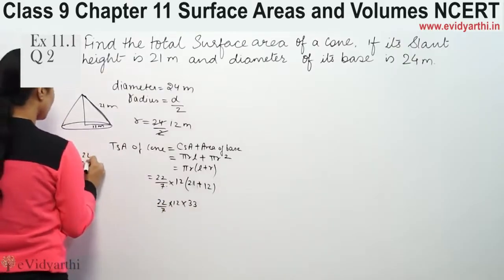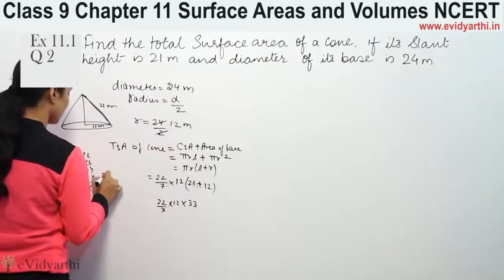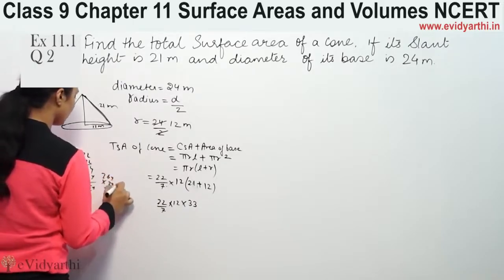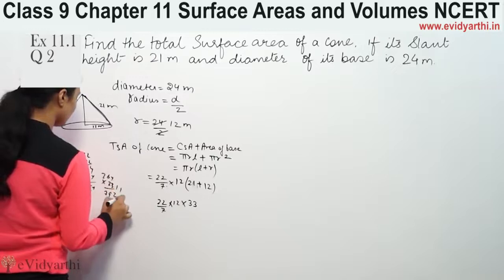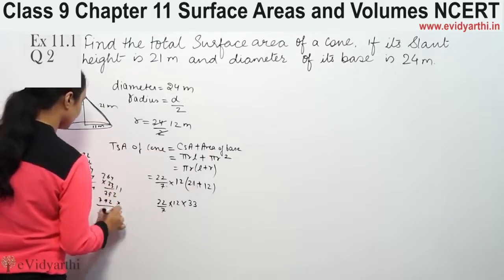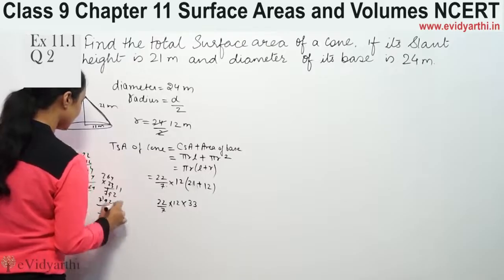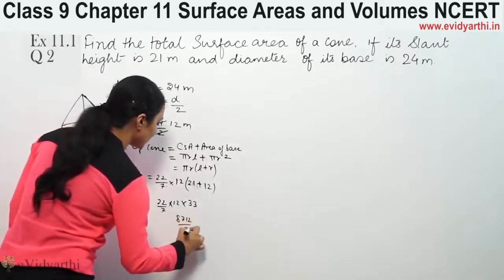22 into 12 gives 264. 264 into 33 gives 8712 by 7.